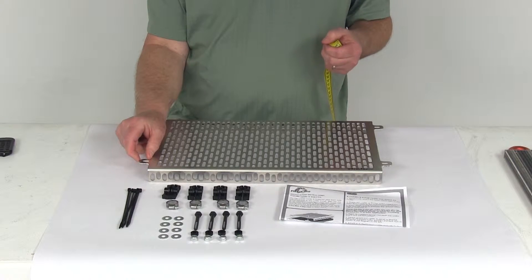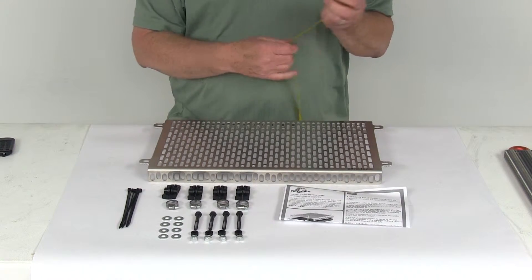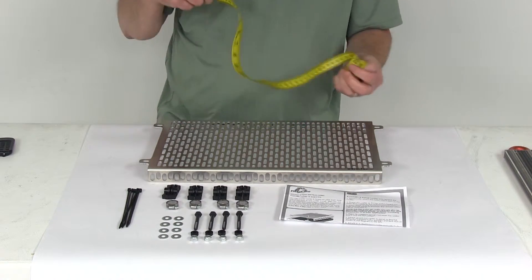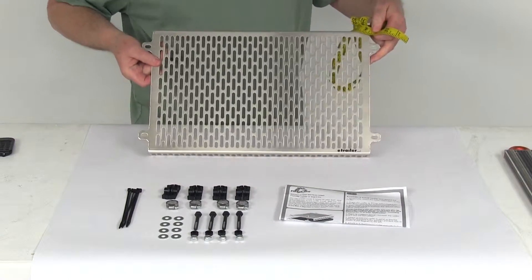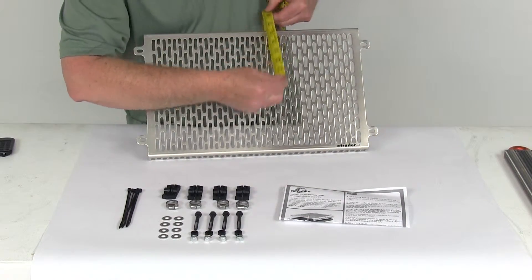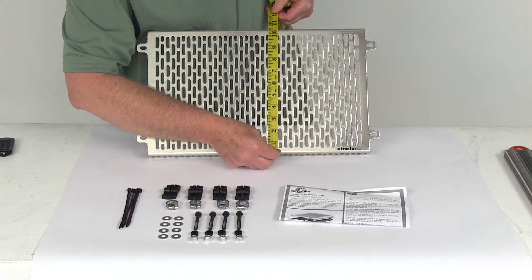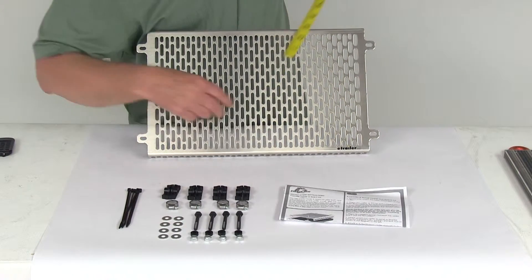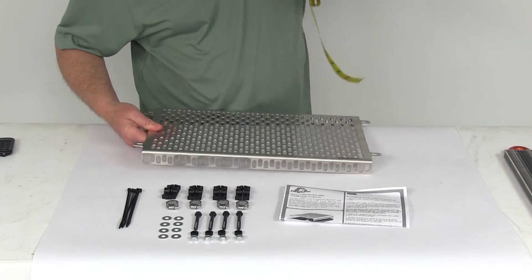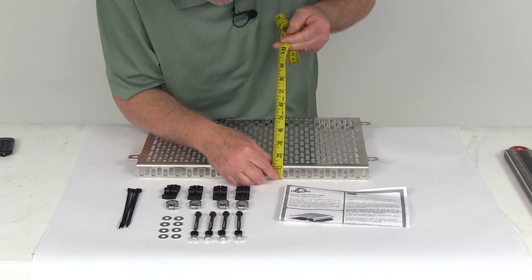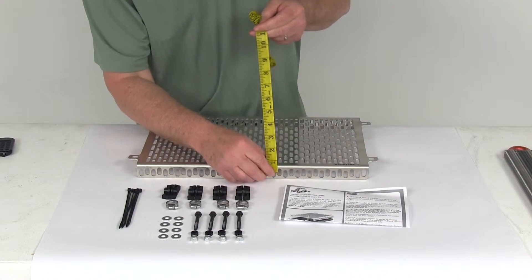The mounting tabs extend out about three-quarters of an inch on each side. The overall height, from the bottom to the very top, is right at about 10 and a half inches tall, and the depth of the guard itself is right at 1 inch deep.